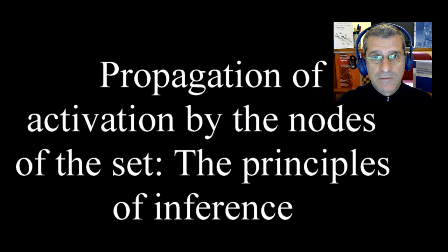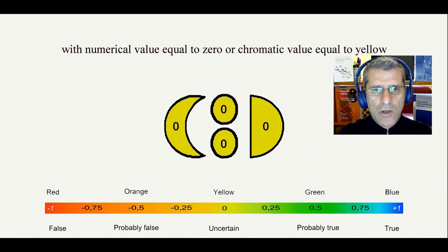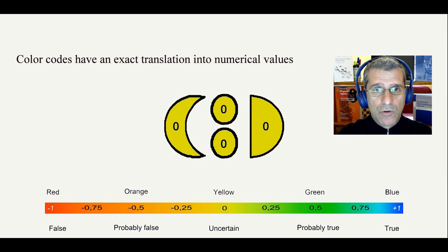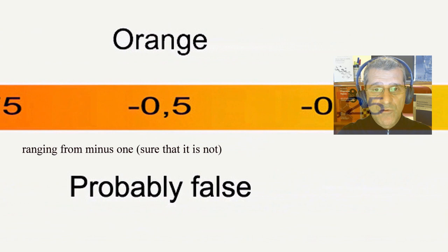We can consider all the nodes of the net initially uncertain, with numerical value equal to 0 or chromatic value equal to yellow. Color codes have an exact translation into numerical values, ranging from minus 1, sure that it is not going to 0, uncertain, to 1.